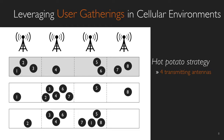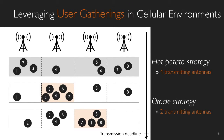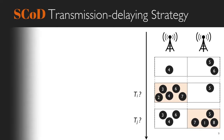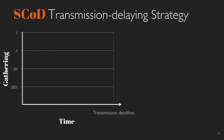However, refraining from transmitting immediately can help reduce the total number of transmissions. Given a deadline accounting for the duration of validity of the content or the delay that users can tolerate before receiving the content, we can reduce by half the number of transmissions. This is the case of the Oracle strategy, which draws on prior knowledge of user mobility. Since the Oracle strategy is not achievable because of this prior knowledge, we propose SCOD, a delaying transmission strategy which determines the time of transmissions based on the user gathering ratio.